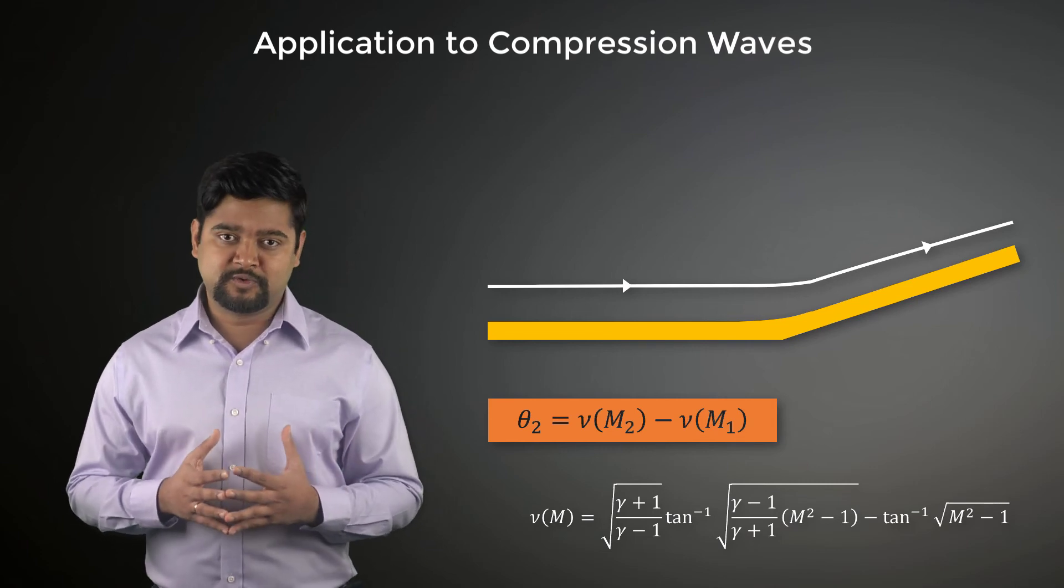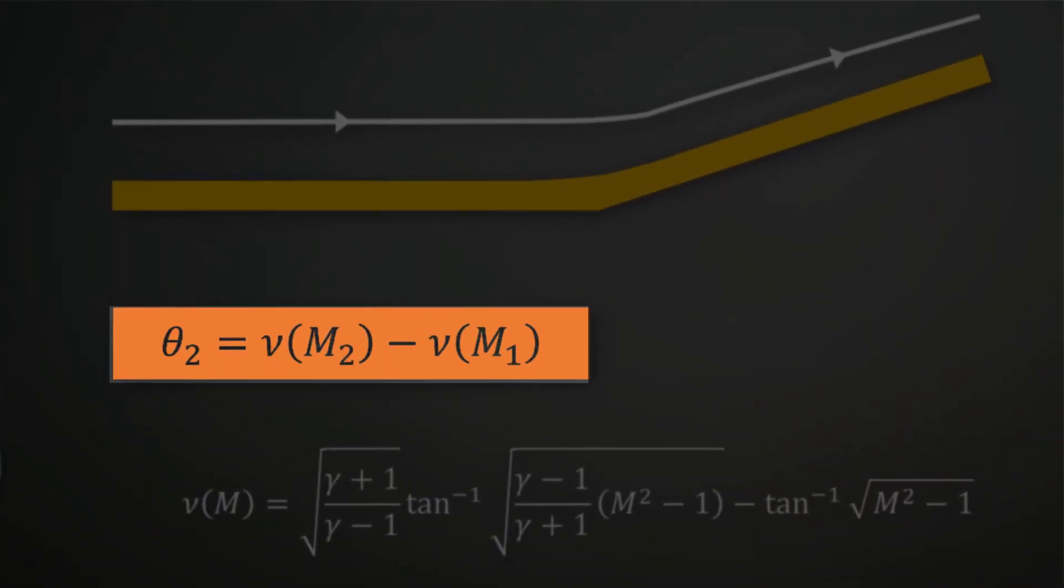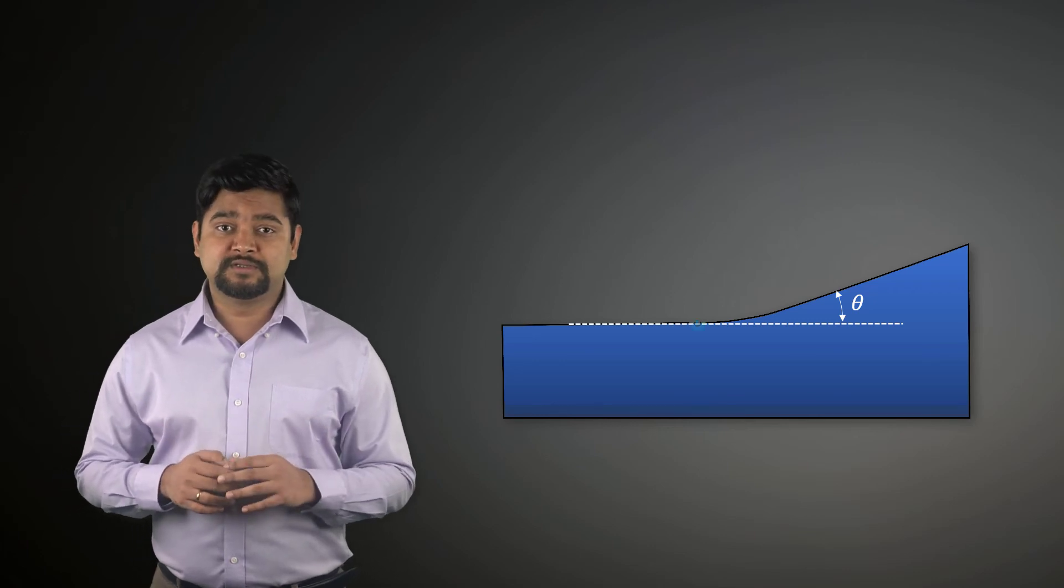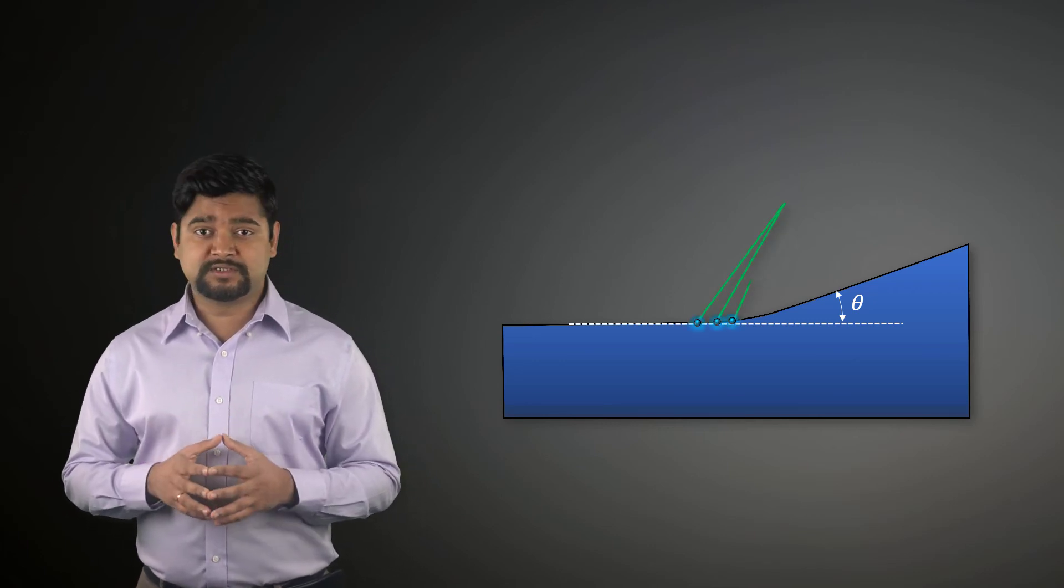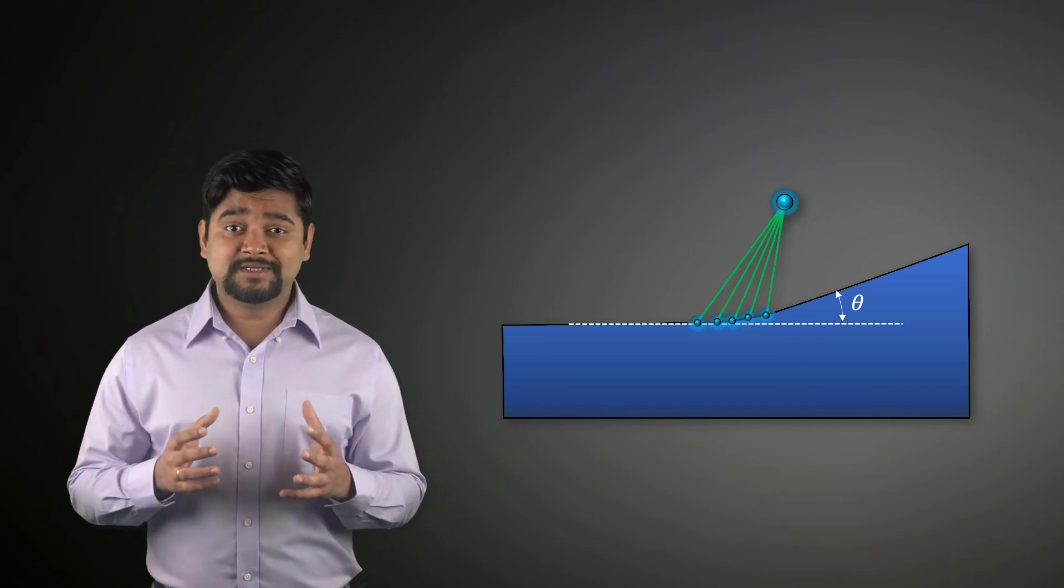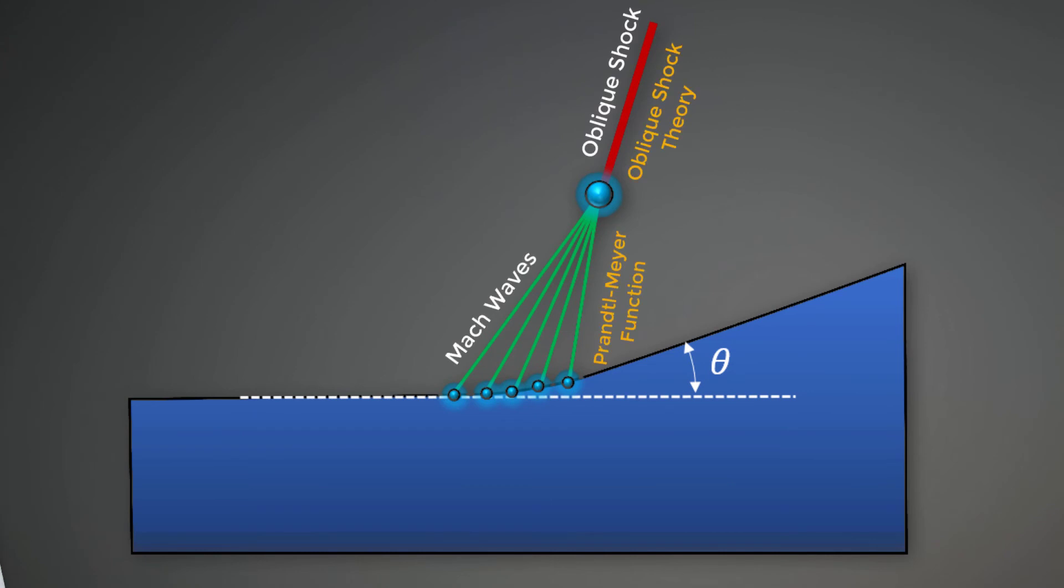Keep in mind that this analysis is limited to the near wall region where the envelope Mach waves exist. Further away from the wall, these Mach waves coalesce into an oblique shock and the oblique shock theory needs to be applied.